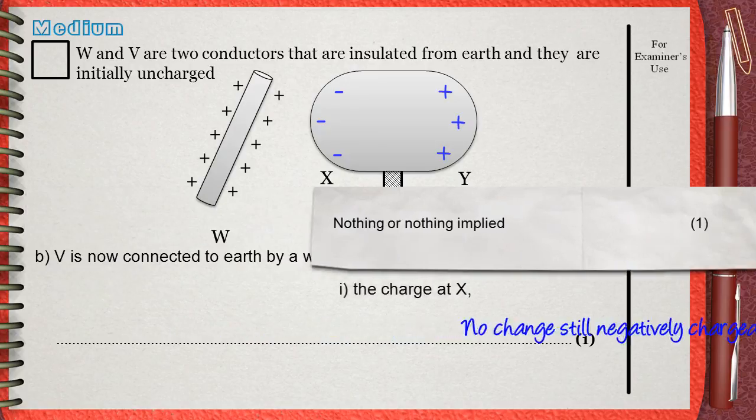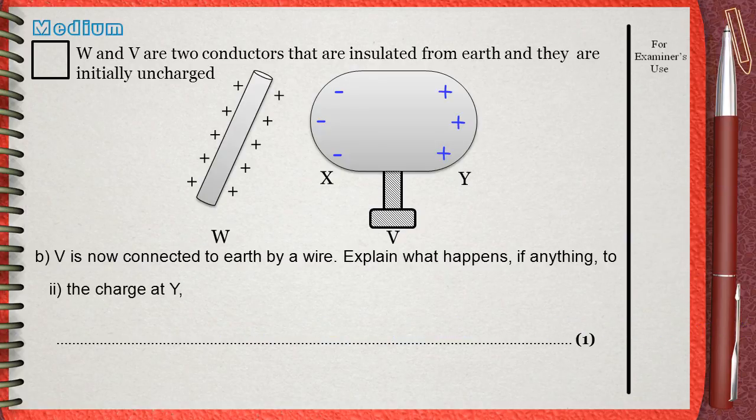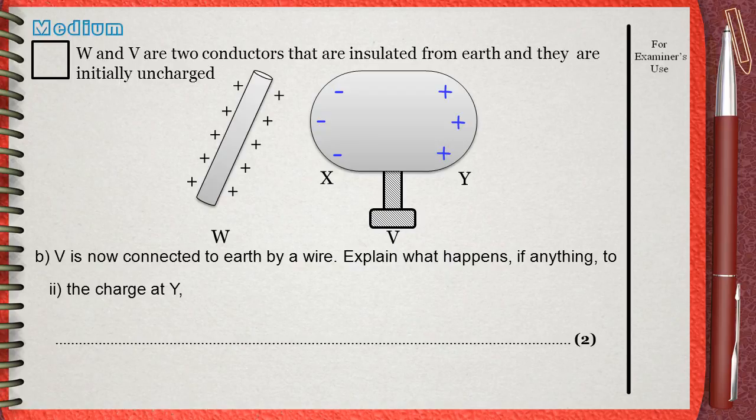The following question, question ii. So what happened to the charge at Y? According to what we said in the previous explanation, Y now becomes neutral.